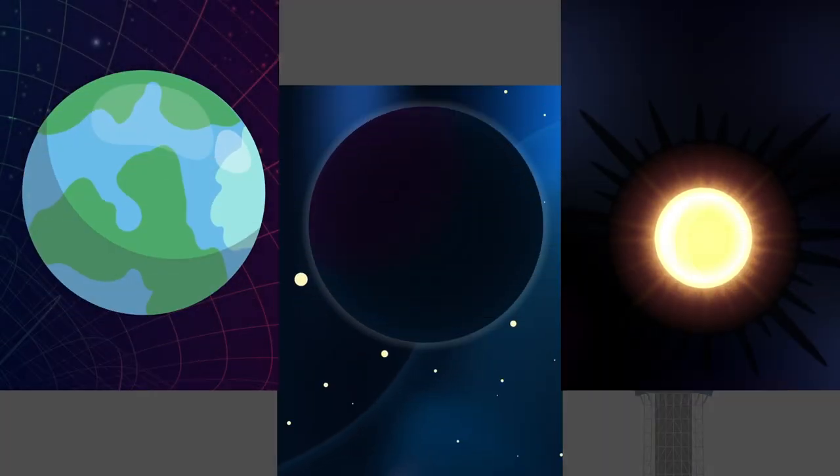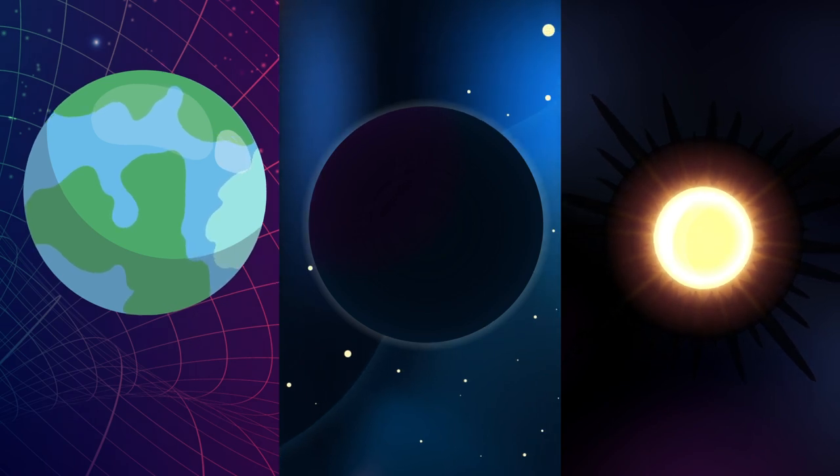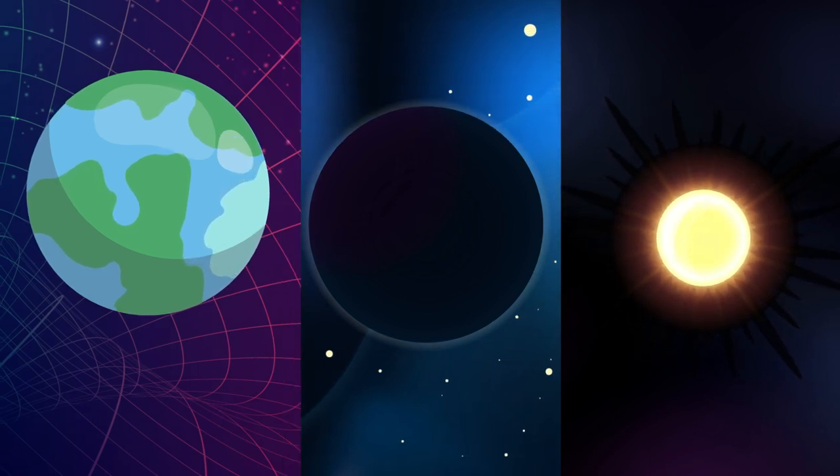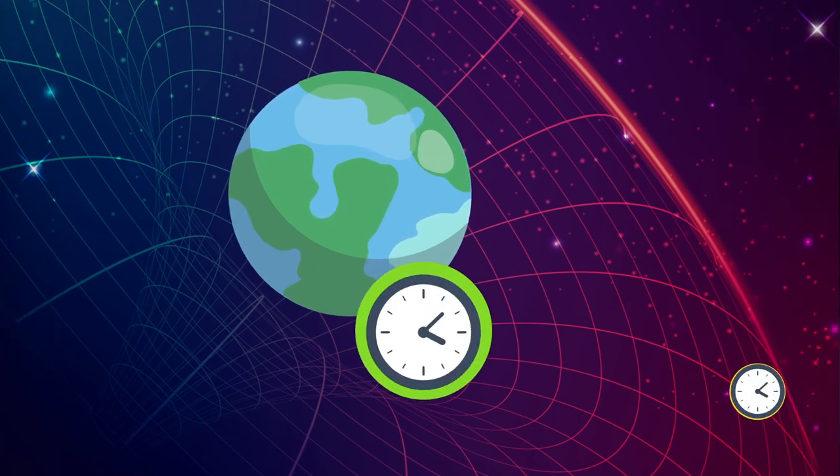Einstein theorized that massive objects warp spacetime, the fabric of existence throughout the universe. One consequence of that is that time runs differently between different gravitational fields, slowly in deep fields and faster in shallow ones.